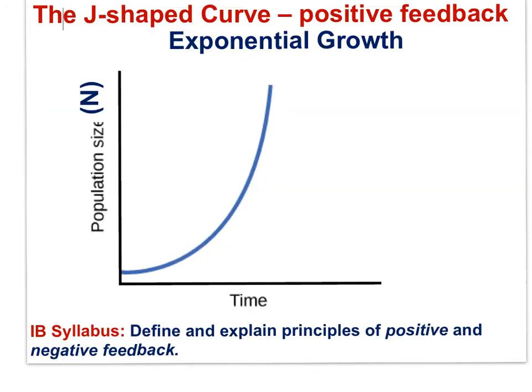Here is the J-shaped growth curve with population size — number of individuals — on the y-axis. Over time, the curve displays exponential growth. The number added to the population increases with each unit of time. The number of individuals being added is proportional to the amount already present. The bigger the system is, the greater the increase per unit time. Exponential growth results from positive feedback.